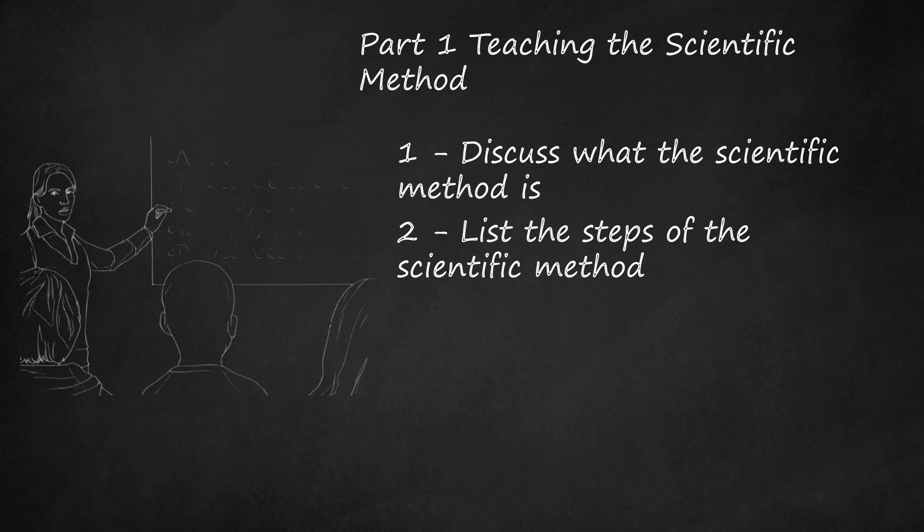The most basic steps of the scientific method are the following: Ask a question. Make some observations. Form a hypothesis. Test the hypothesis. Draw some conclusions.